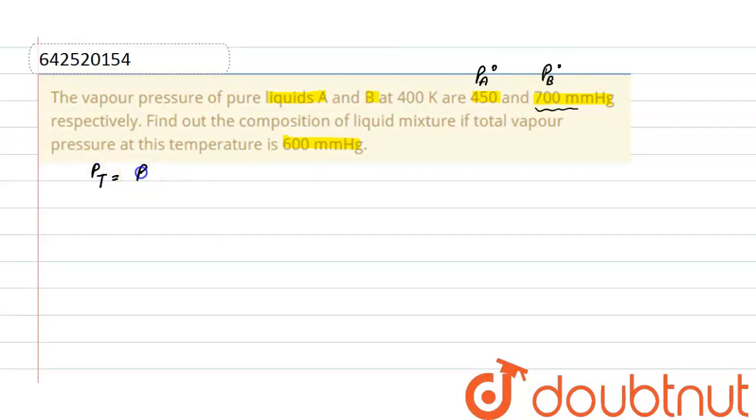total pressure is equal to partial pressure of A plus partial pressure of B, where Pa is equal to partial pressure of pure liquid A into mole fraction of A, and Pb is equal to pressure of pure liquid B into mole fraction of B.